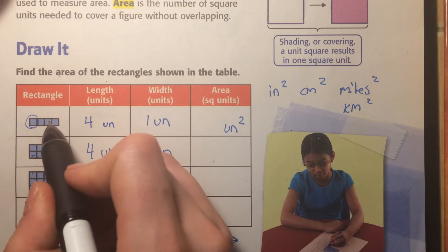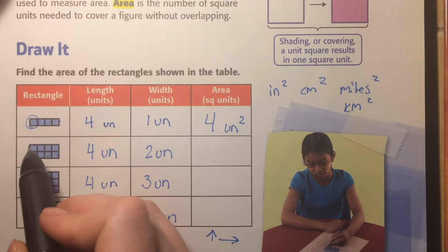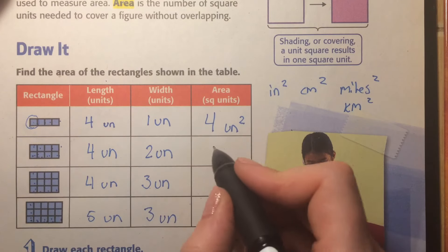So, how many do we have all together? One, two, three, four. One, two, three, four, five, six, seven, eight. Units squared.